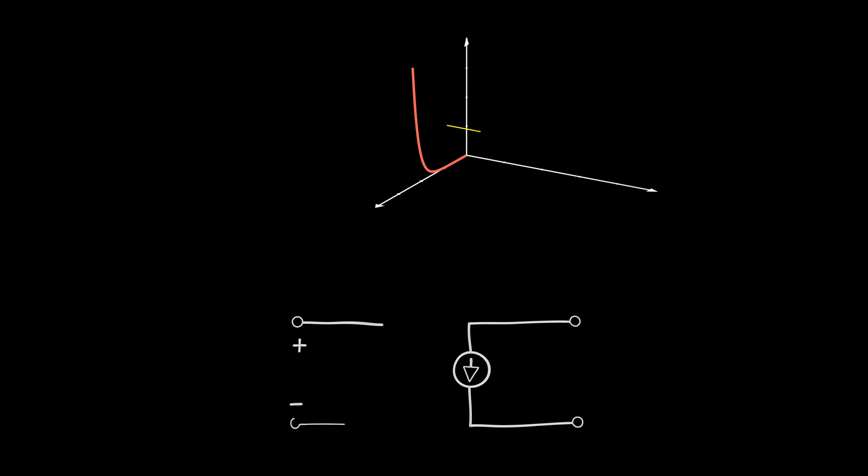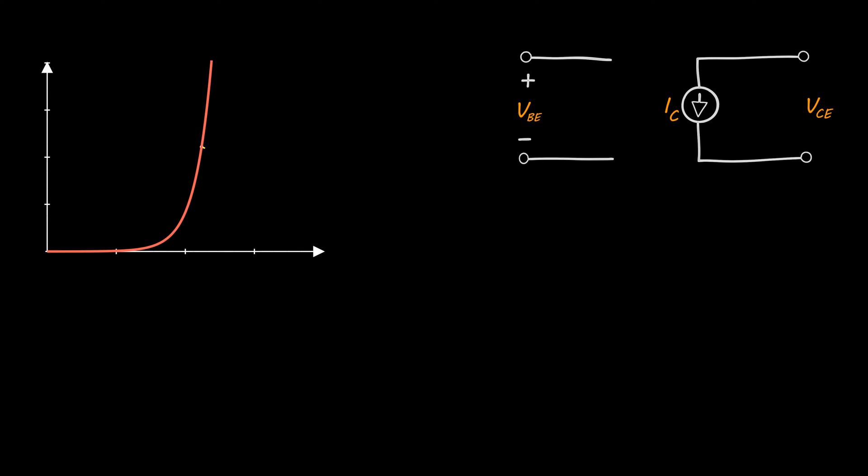In a previous video, we saw that BJT is a voltage controlled current source when worked in a forward active region. We also introduced the large signal model and we saw the mechanism of voltage amplification.